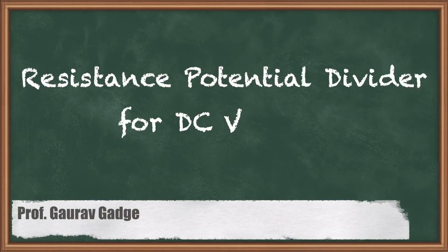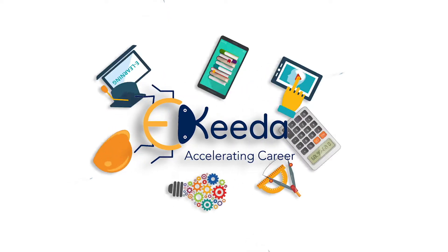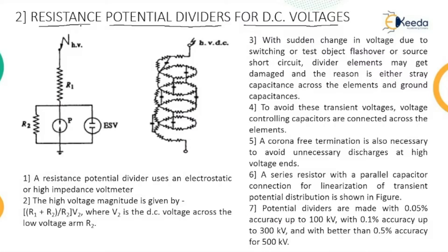Hello friends, welcome back to the series lecture on high voltage engineering. We are discussing resistance potential divider for DC voltage. This name indicates the resistance is used where the potential gets divided and that measures the value of the DC voltage. The arrangement is the same as the previous lecture where a high value of resistance is used in series with the micro-ammeter.